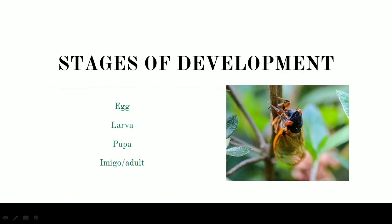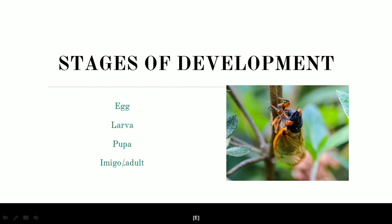Now talking about the stages of development: there are mainly four stages after the embryonic stage. The first one is the egg, then we have the larva, after that we have the pupa, and the fourth one is the adult, which is also given the name imago. So: egg converts into larva, larva converts into pupa, and finally the adult, also called imago.